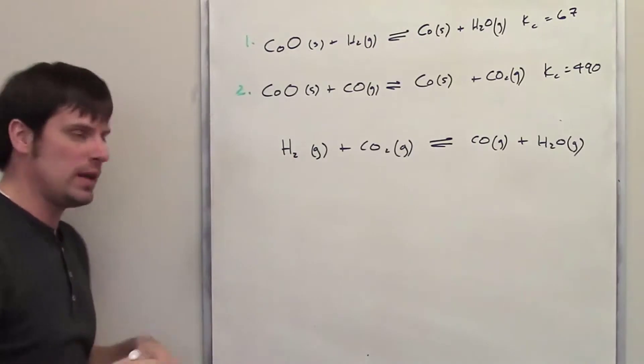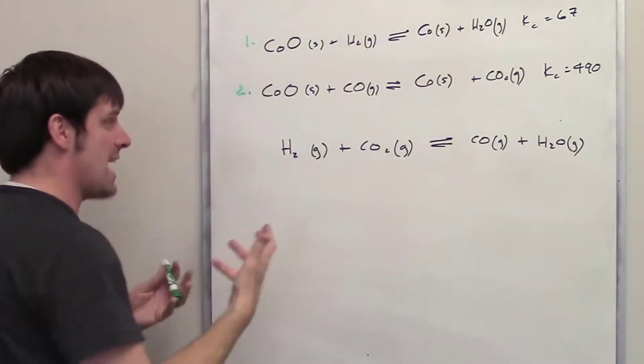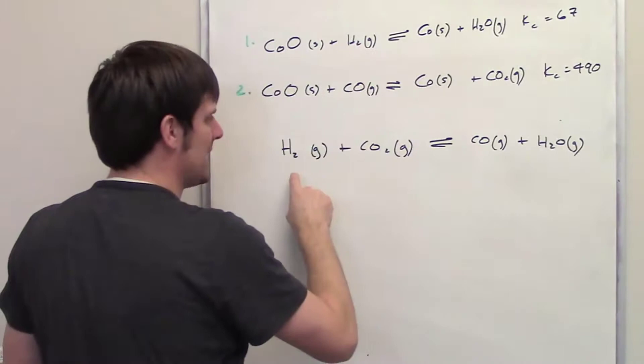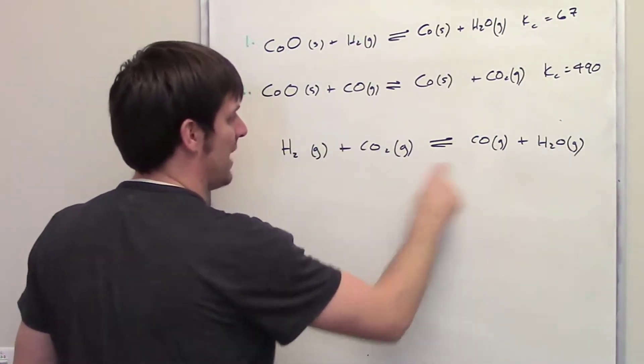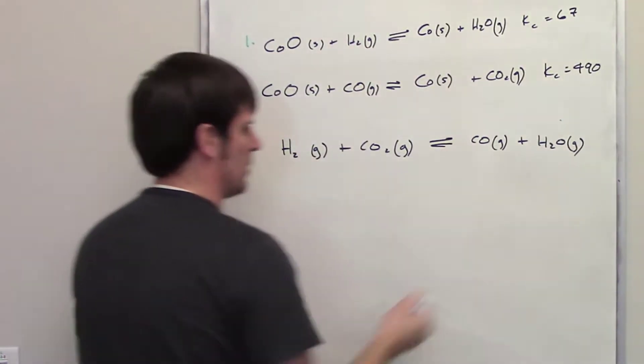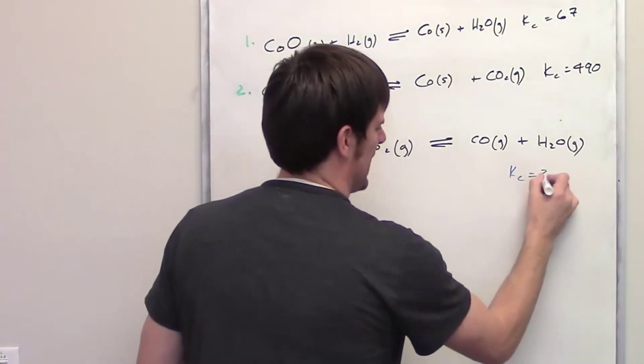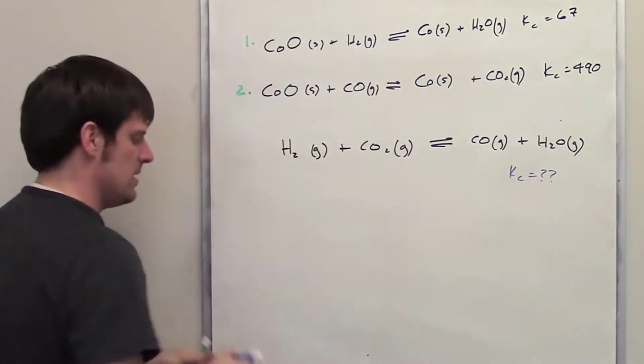I'm going to go ahead and call these reactions reaction 1 and reaction 2. I'm then told, after having been given this information, what is the Kc expression or value going to be for this overall equation. So Kc for this reaction is the big mystery. How do we do that?